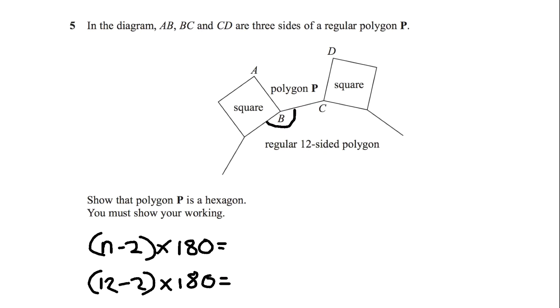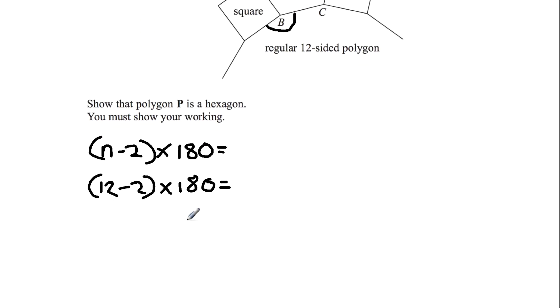12 minus 2 is 10. Times it by 180 gives us 1,800. So the sum interior angle of this regular 12 sided polygon is 1,800.